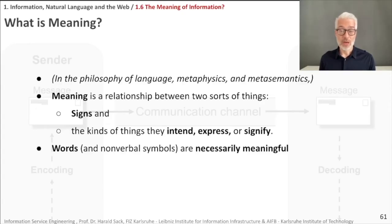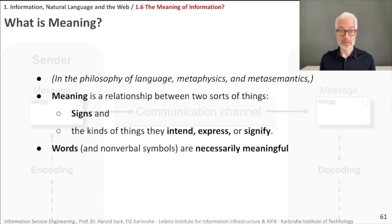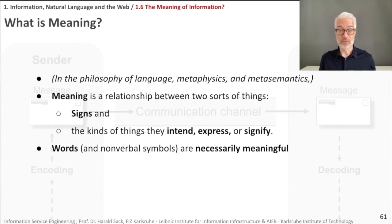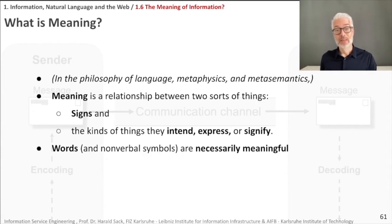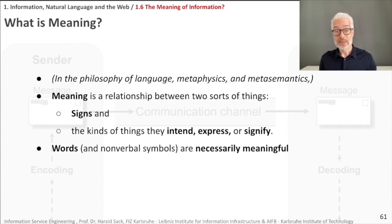First of all, we have to ask ourselves: what is meaning? Meaning is something that is discussed in philosophy in general, and in particular in the philosophy of language, metaphysics, or metasemantics. So there, meaning is a relationship between two sorts of things. On the one hand we have signs, symbols, or words — in general you say signs — and the kinds of things they intend, express, or signify. So this determines the meaning: the relation between a sign and a specific intent or expression or signal is exactly the meaning.